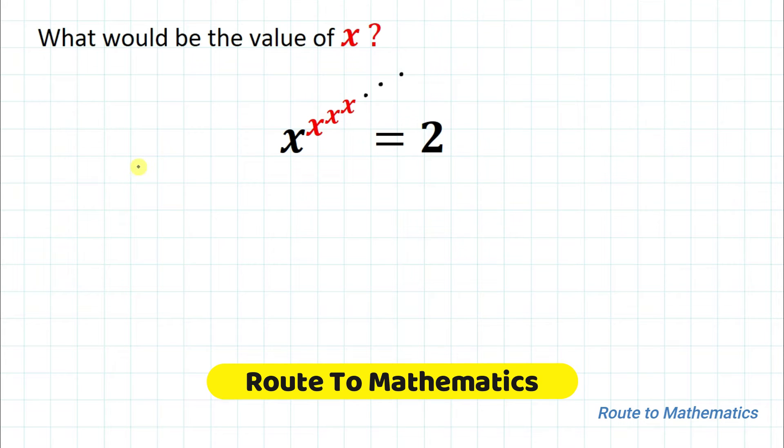Hello everyone, welcome to Route to Mathematics. In this video, we're going to solve this given question: What would be the values of x when x to the power x to the power x to the power x goes to infinity equals to 2? Here we are asked to find the values of x, so without any delay, let's start the solution.